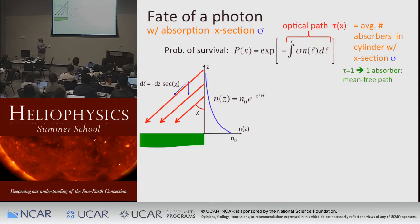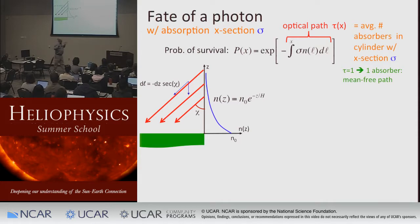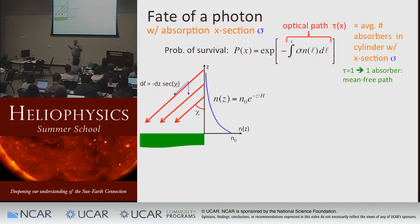The cross-sectional area times the number density of absorbers integrated along a path gives a dimensionless number known as the optical depth — the average number of absorbers in that length. If I integrate from infinity to a position, that integral tells me the average number of absorbers. It's the volume of a cylinder times the number of things per volume. When I hit one absorber, I die — I get absorbed. Will I go exactly to tau equals one and be absorbed every single time? No.